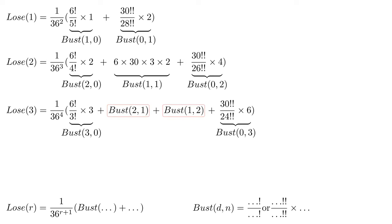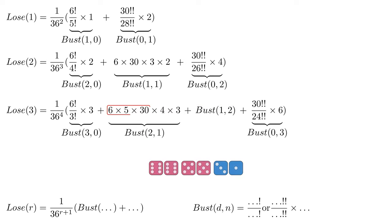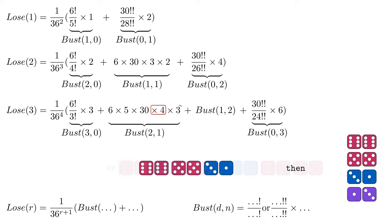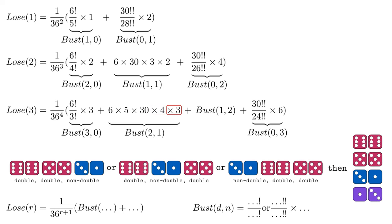Here's what bust 2, 1 expands to. The 6, 5, and 30 come from the chances of rolling a double, a different double, and then a non-double. The 4 refers to the rolls that could cause a bust. This 3 corresponds to the three orders the rolls could have happened in. The non-double could have happened last, second, or first. Bust 1, 2 expands into something similar, with a key difference being the 5 rolls that cause a bust.